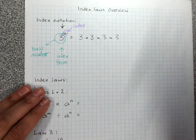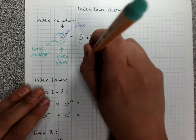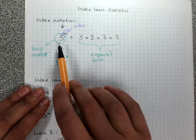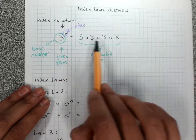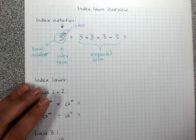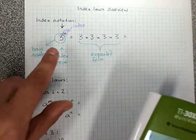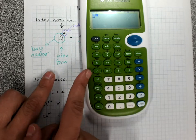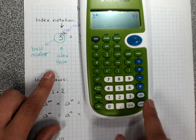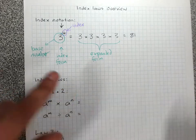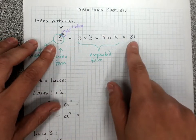This is expanded form — when I write it not as a power, but as a multiplication. And I can get an answer for that. 3 to the power of 4, using my calculator: 3, the power key, 4 equals — that's 81. And if I get asked to evaluate, I want my number answer.